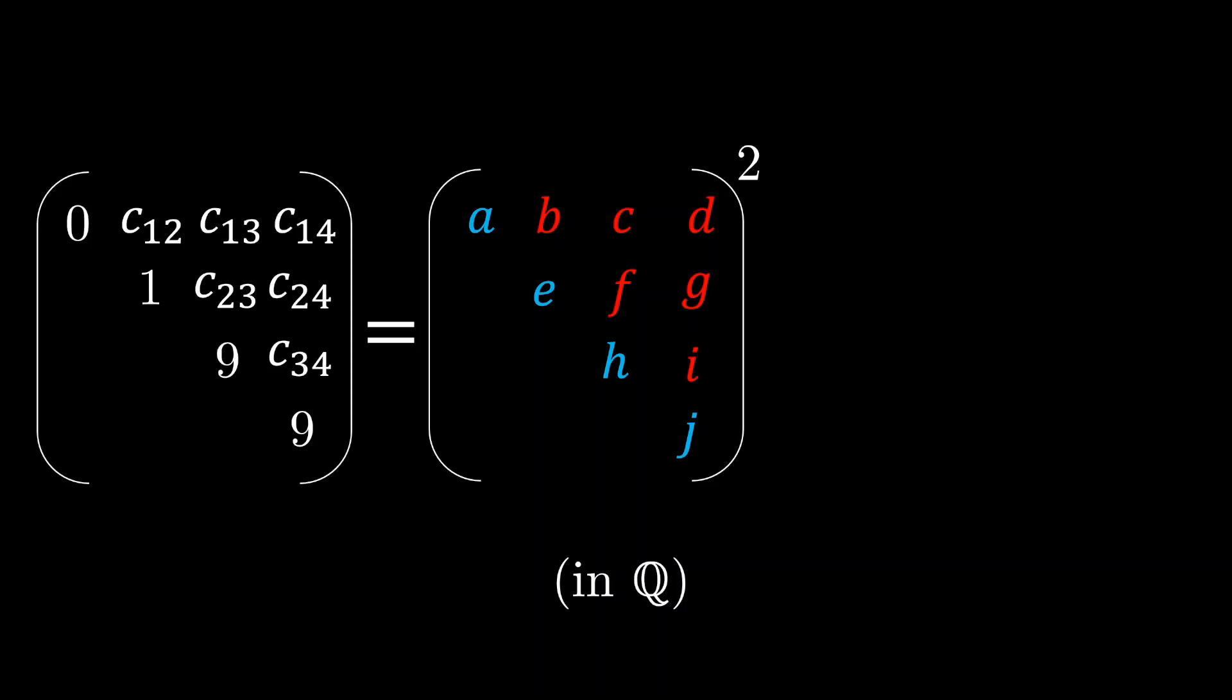Now, by what I emphasized earlier on, at most 1 of a, e, h, and j is 0. Of course, in this case, you know that a is the one that is 0 but I'm trying to prove it more generally here that if you have at most 1, 0 on the diagonal then the square root will have at most only 1, 0 on the diagonal as well. Right? And this property will come in very important later when we solve for the other terms b, c, d, f, g, and i.